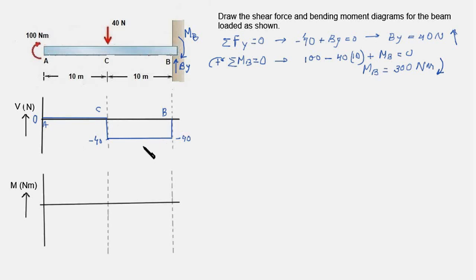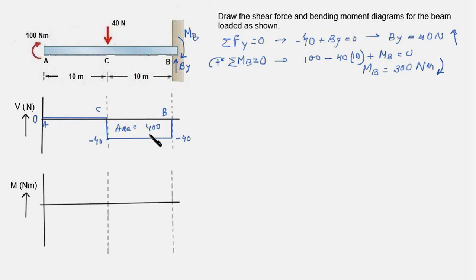Now let's compute the area under the shear force curve. The area between A and C is 0, and the area between C and B is 40 times 10 meters, that is 400. We will need this information when drawing the bending moment diagram.